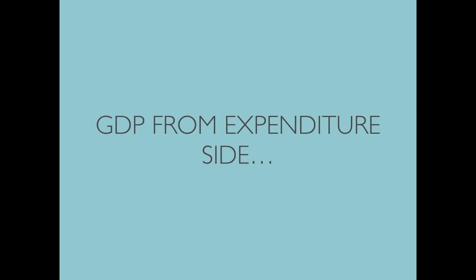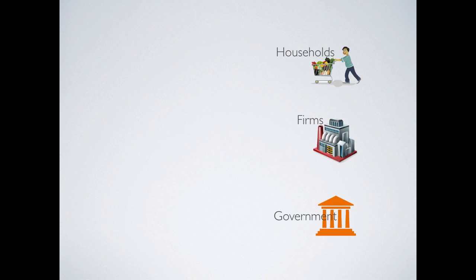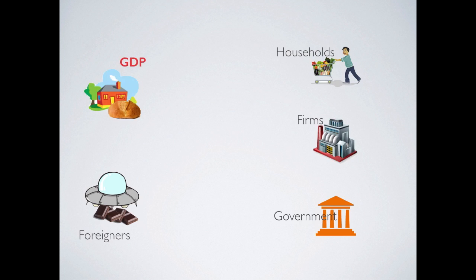So far, we have learned how to compute GDP by counting all the final goods produced within a given time period. However, doing so is very time-consuming and not really practical. A common way to calculate GDP is to consider who bought it — that is, computing GDP from the expenditure side. The idea is to look at the whole economy to see who can buy goods produced by domestic producers. There are only four types of agents: households, firms, government, and foreigners. For the GDP amount of goods produced, there is an amount X purchased by foreigners, which is called export. Deducting X from GDP leaves the remaining domestic goods consumable by the three home-country agents.